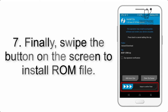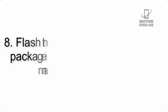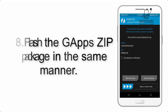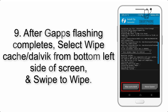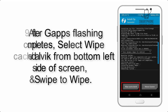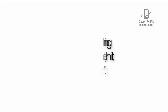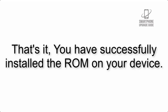Step 8: Flash the GApps zip package in the same manner. Step 9: After GApps flashing completes, select Wipe Cache and Dalvik from the bottom left side of the screen and swipe to wipe. Step 10: When the flashing process is complete, hit Reboot System. That's it — you have successfully installed the ROM on your device.